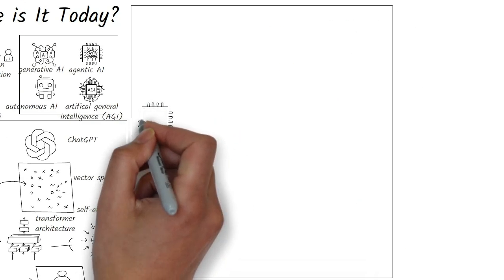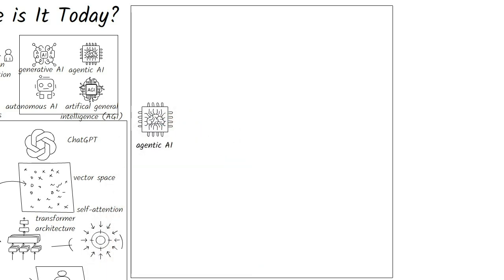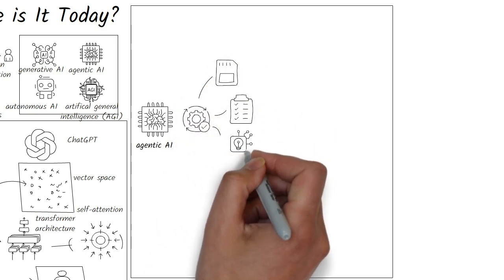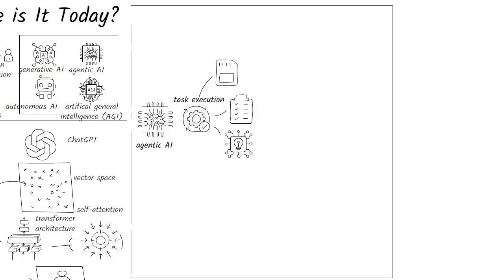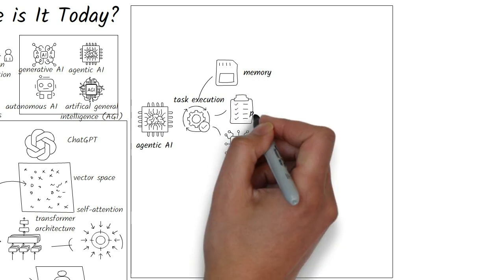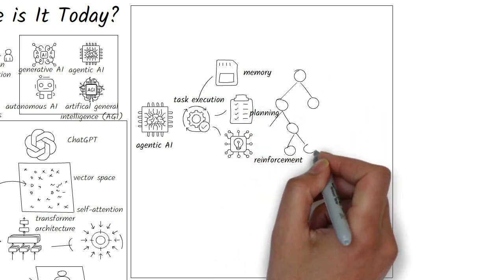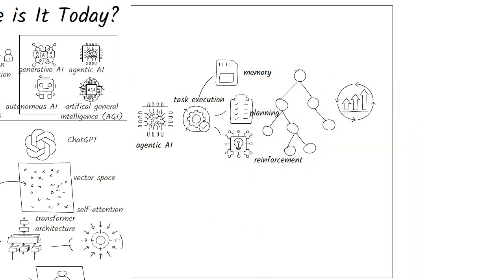And then there's agentic AI. Traditional AI follows instructions, but agentic AI makes decisions and executes tasks independently. It uses memory, planning, and reinforcement learning to execute tasks without human intervention. It does so by breaking down complex goals into smaller steps, adapting when things go wrong and continuously improving.